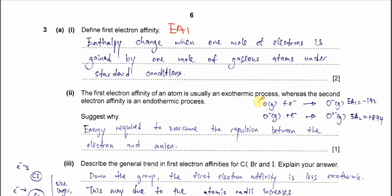I use this one as example. There'll be an enthalpy change when one mole of electron is gained by one mole of gaseous atom under standard condition. Remember it's always one mole of electron gained by one mole of gaseous atom to form one mole of one negative gaseous ion under standard condition. This is the definition for first electron affinity.